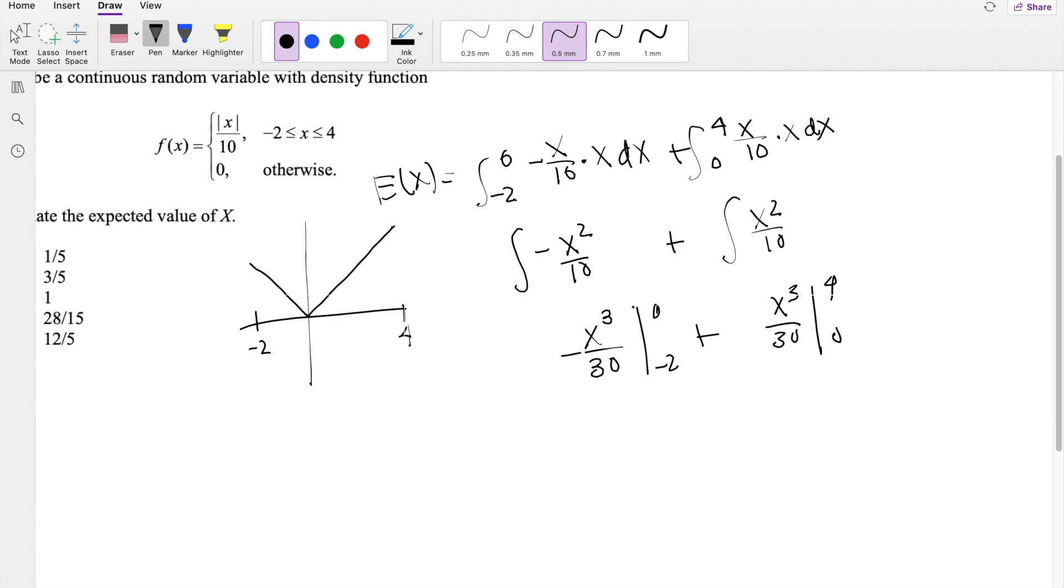So plugging in the upper limit, you get 0, minus minus becomes positive. Negative 2 to the cube, that's negative 8 actually, over 30. And on the other side,